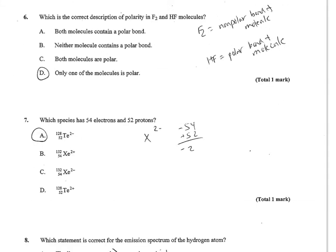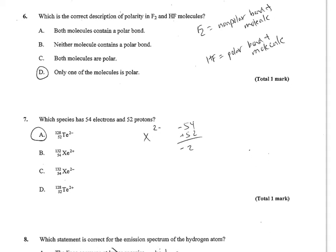Number 6, which is the correct description of polarity in F2 and HF? Each of these is just a single bond. F2 single bonded to itself and HF single bonded to each other. But F2 is going to be a nonpolar bond and therefore a nonpolar molecule. But HF is going to be both a polar bond and a polar molecule, because fluorine is very polar. And because there's just two atoms, it is definitely going to pull the electrons toward the fluorine, creating a negative end and a positive end. So only D is true. One of the molecules is polar.